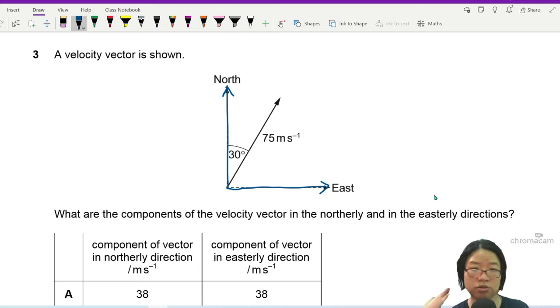The shortcut I think about is if you are beside the angle, this will be 75 cos 30. Cos theta is side over hypotenuse.